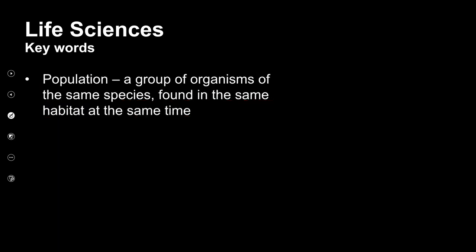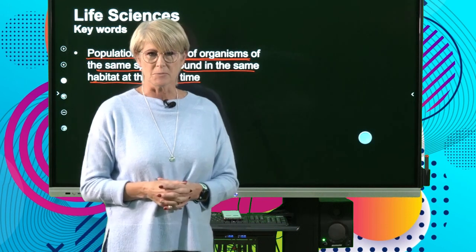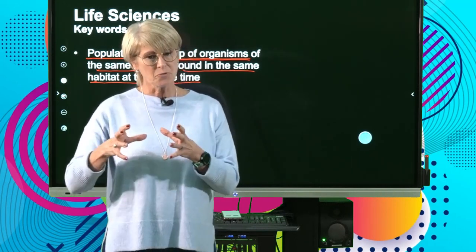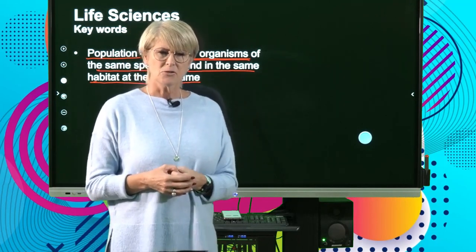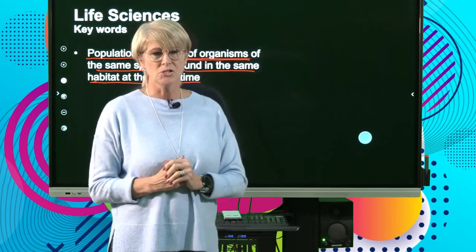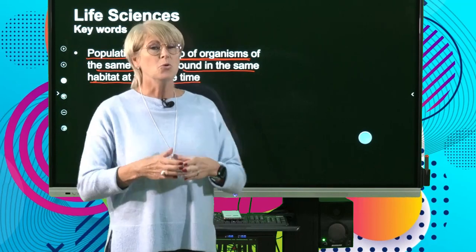Then we have a look at the term population. A population is a group of organisms — and that's why I say it's difficult, the definitions are very similar. A population is a group of organisms, usually of the same species, found in the same habitat at the same time. We don't say anything about them interbreeding and producing fertile offspring. A species can be spread over very large areas, but we find smaller groups within it, and we call those populations.